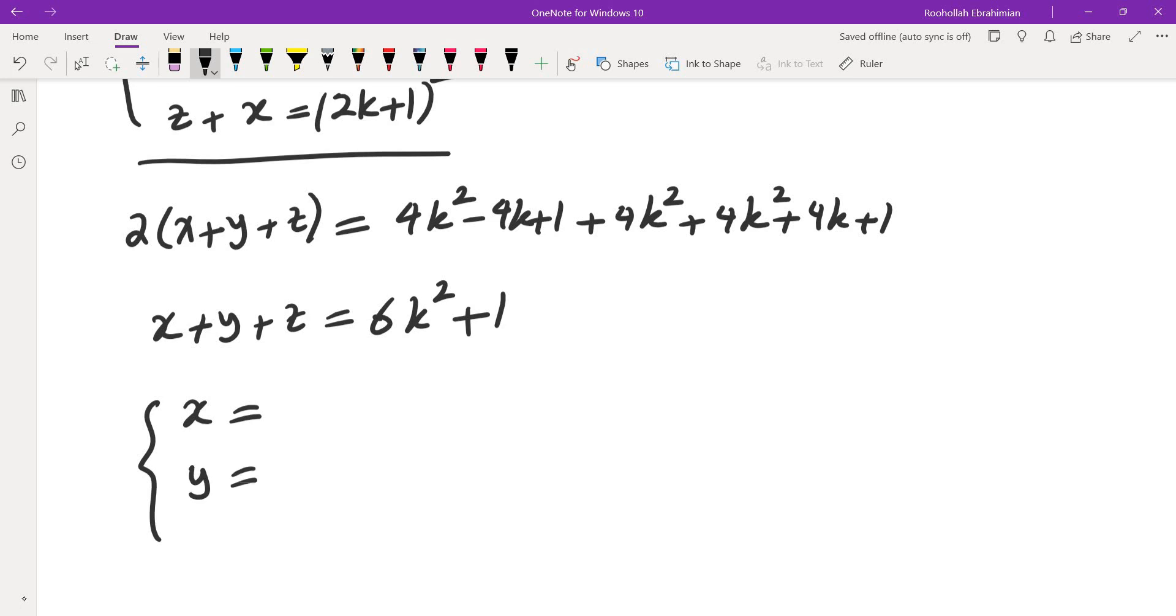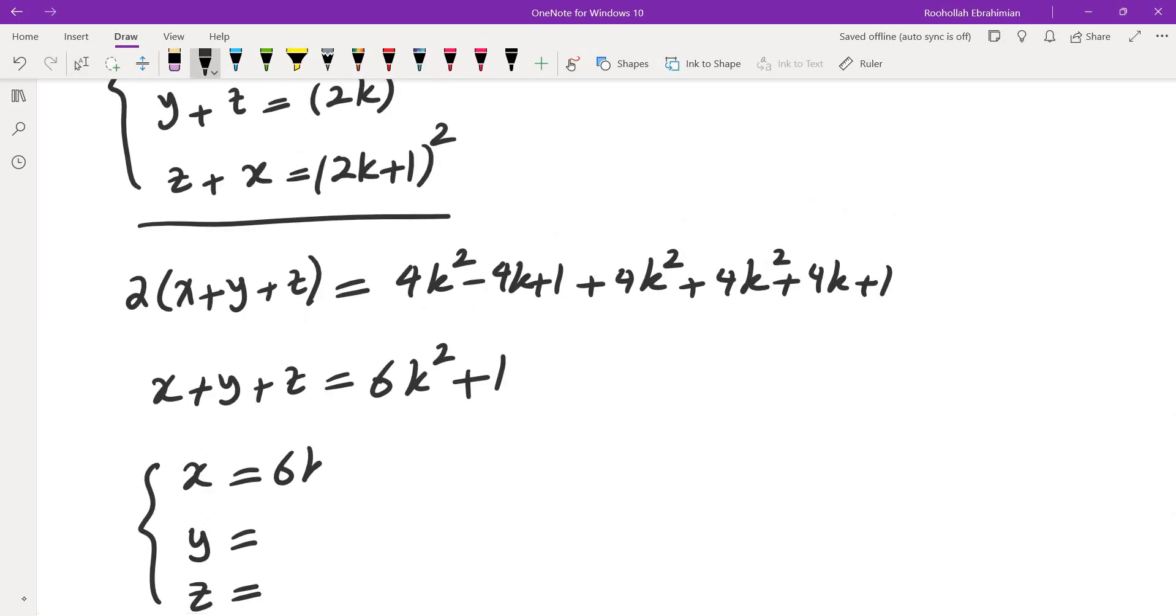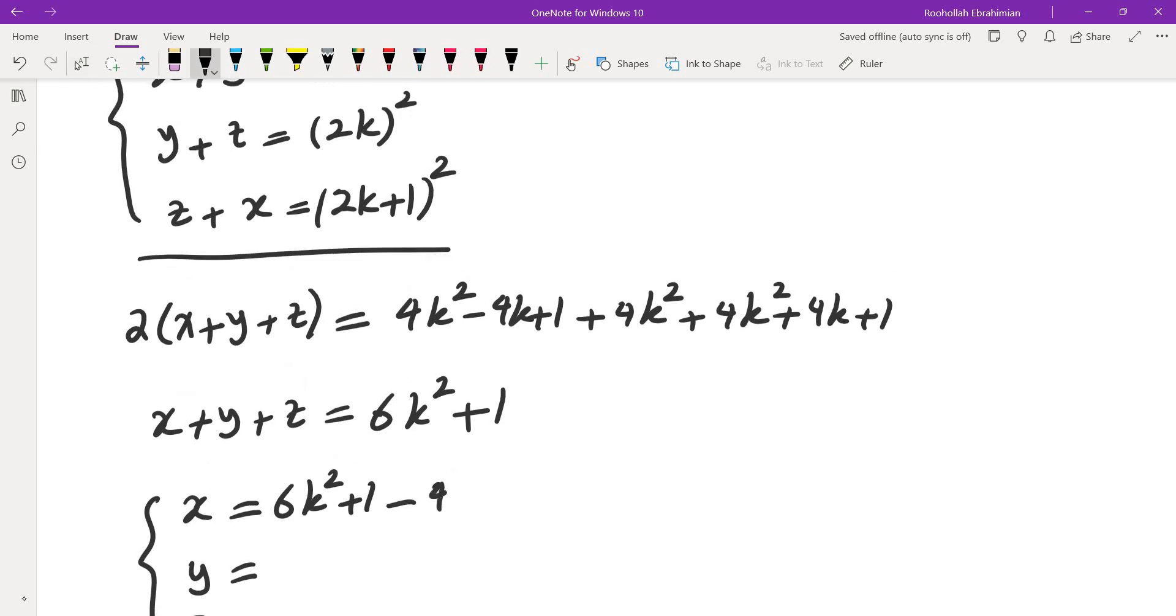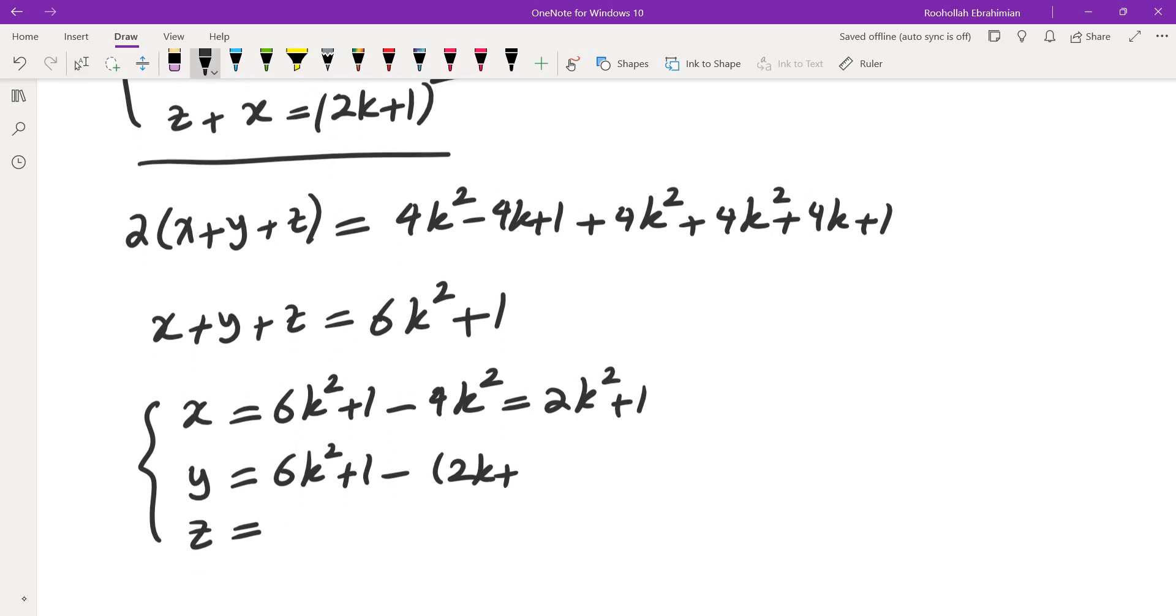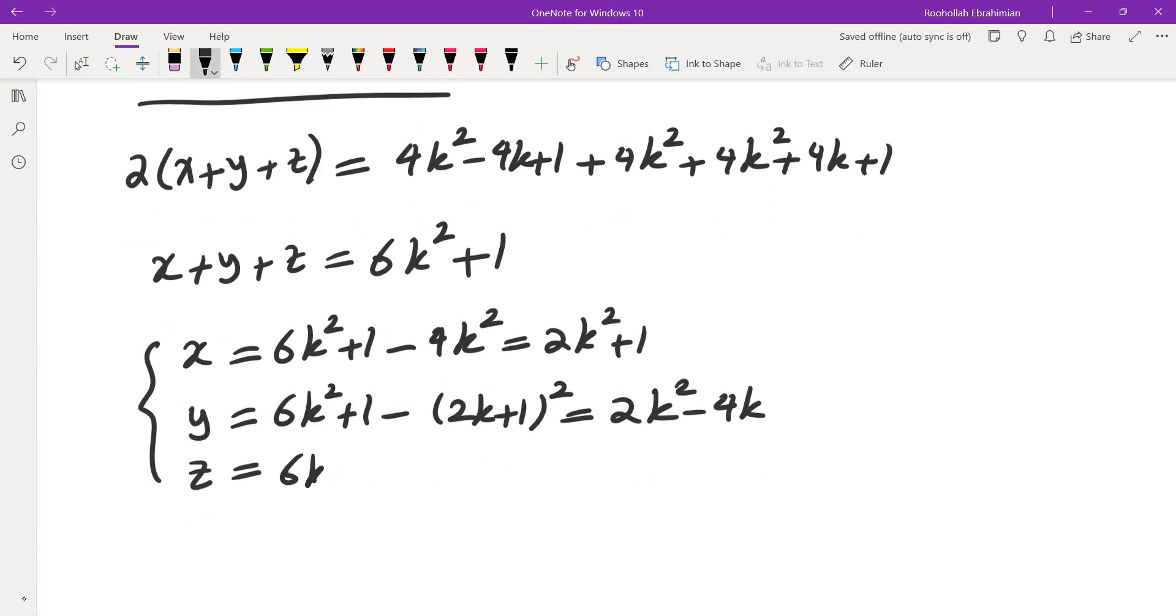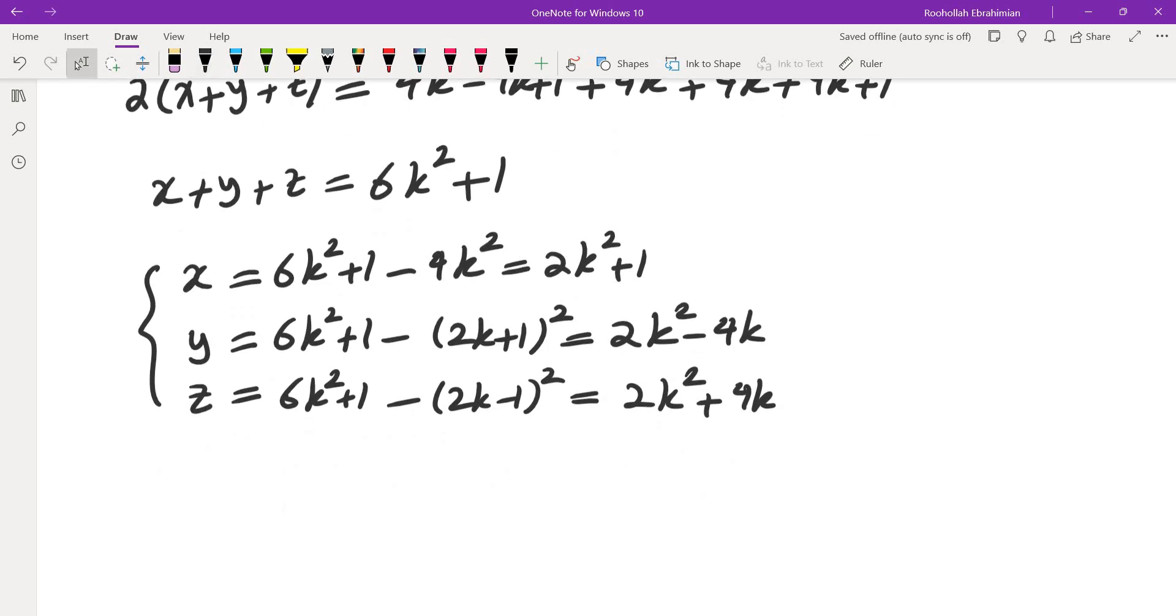So let's solve for x, y, z, and see what we get. So we get x would be 6k squared plus 1, which is the sum of x, y, z, minus y plus z, minus 4k squared. So that would give you 2k squared plus 1. y would give you 6k squared plus 1, minus x plus z. x plus z is 2k plus 1 squared, so this would be 2k squared minus 4k. And the last one is 6k squared plus 1, minus 2k minus 1 squared. That was the sum of x and y. This would give you 2k squared again, plus 4k, and the ones cancel.